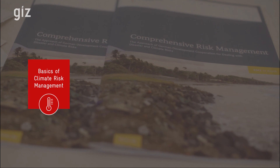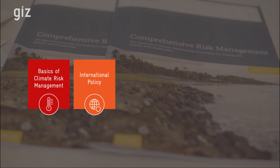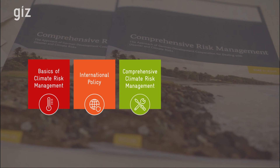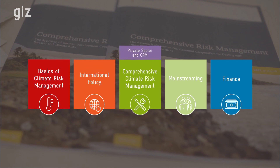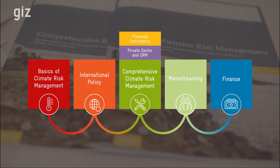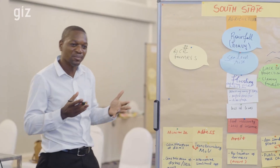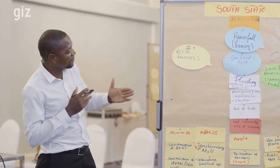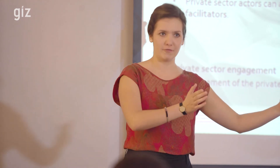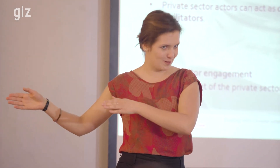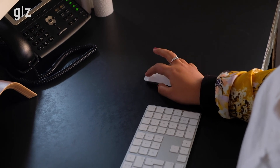The training course consists of several modules: managing climate risks and the basics, international policy, comprehensive climate risk management, and mainstreaming and financing. Module 3 can be extended with an extra focus on the private sector or on financial instruments. The content follows a hands-on methodology and can be adjusted by local trainers to the respective context and specific areas of interest. Additionally, several e-learning formats of the training course are available.